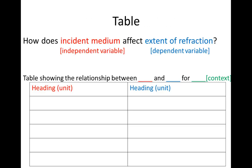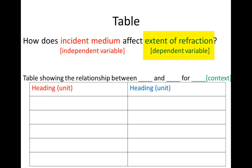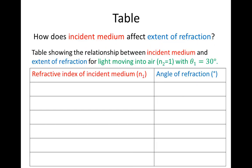We need a table into which we can put our data. Remember that in this investigation, like in the previous one, although our independent variable is incident medium, in the table we're going to put the indicator of this variable — what we're going to use to describe it. And our dependent variable is extent of refraction, but in the table we put the indicator we're going to use to measure it. These indicators are refractive index of incident medium and angle of refraction.